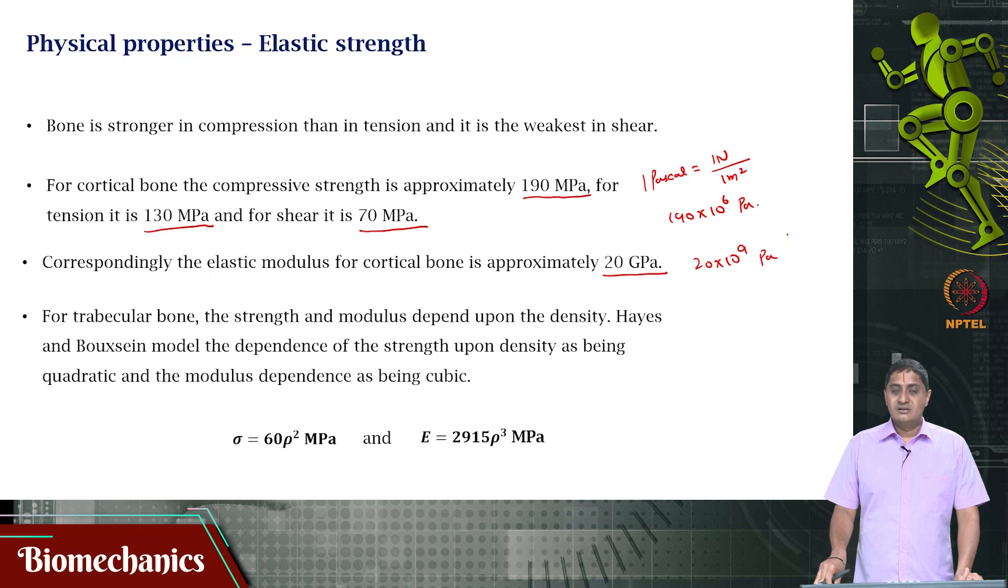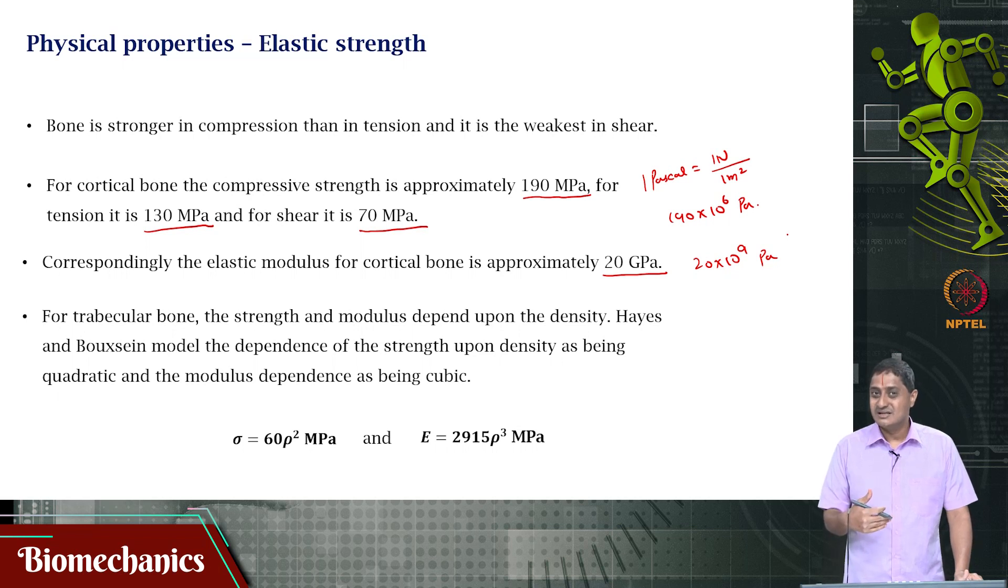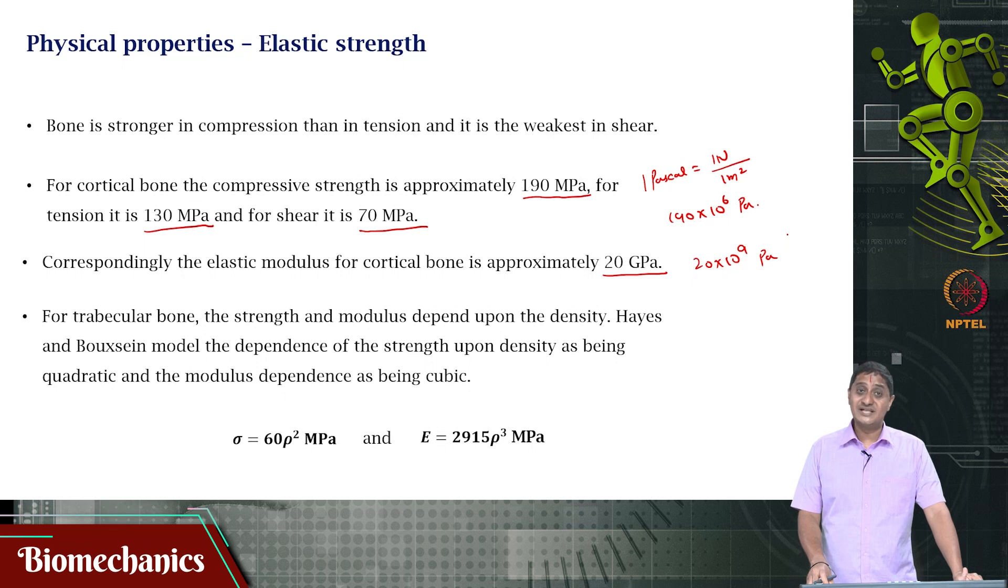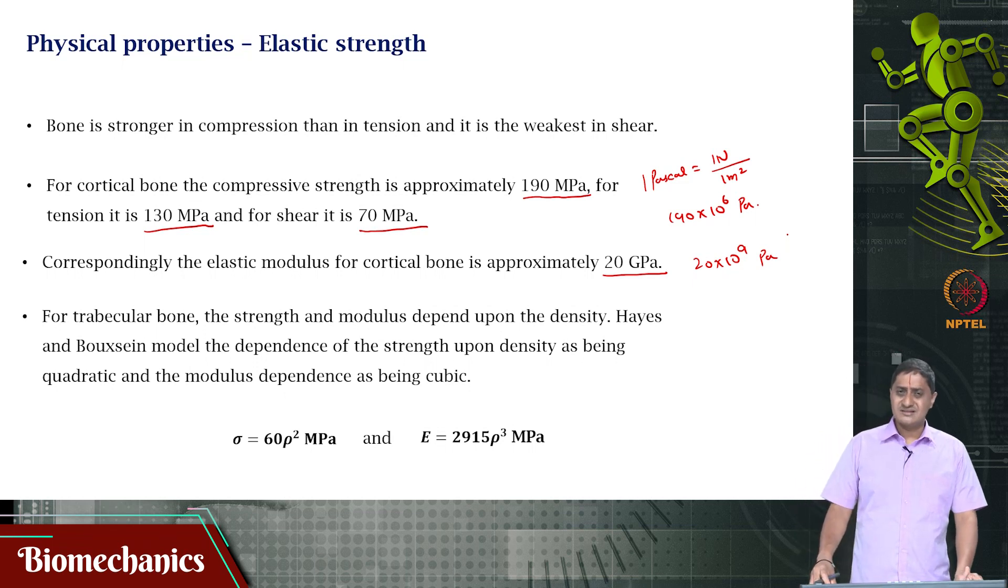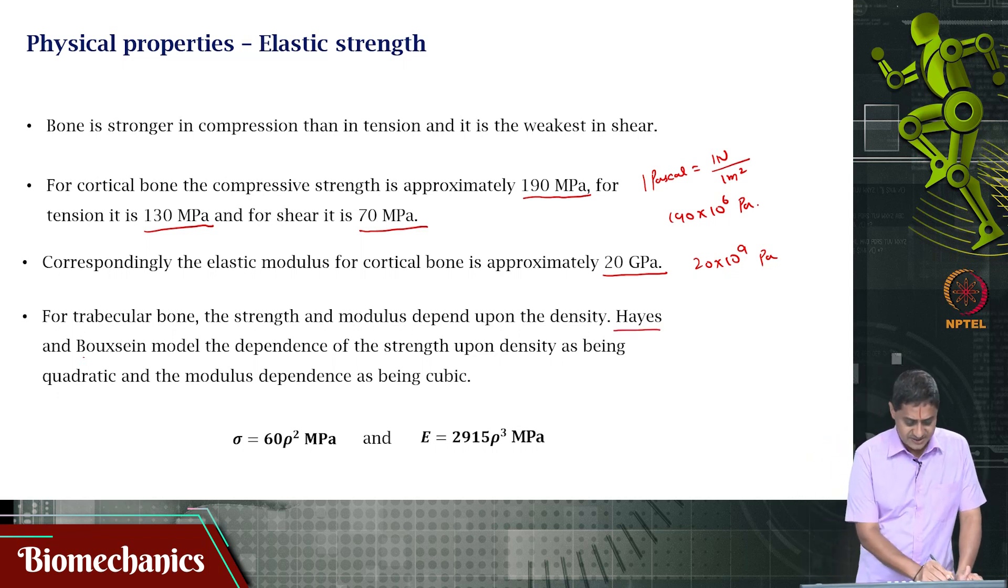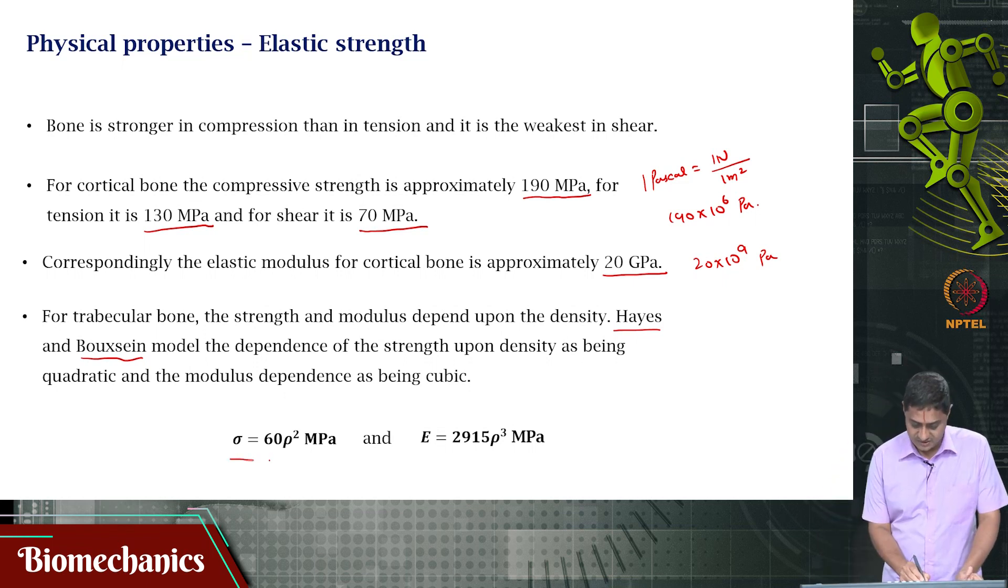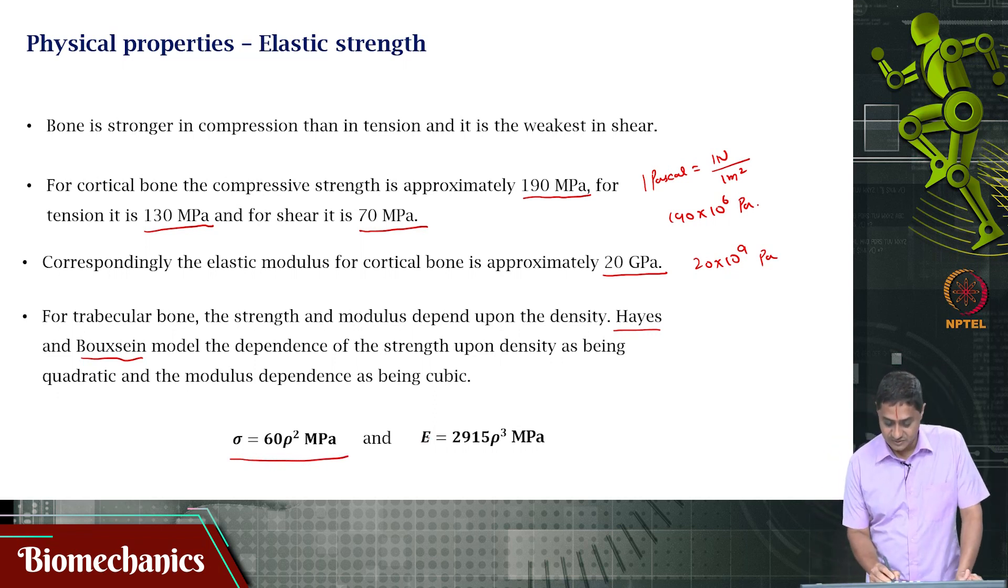For the cancellous bone, the strength of the bone and the modulus depend upon the density. Porosity starts to play a role. The more porosity is the less denser it is and it turns out that its strength is a function of the density or porosity. There are models that have attempted to find out or relate the density and the strength. One such model is the Hayes-Boxene model, which relates the strength upon the density as being quadratic. This, and the modulus as being cubic. That is the elastic modulus is a function of rho cube and the strength is a function of rho squared.